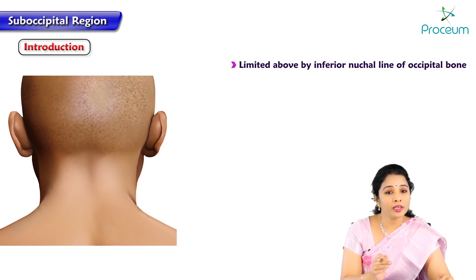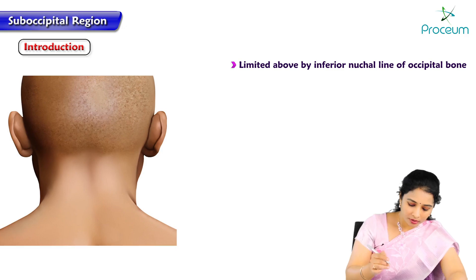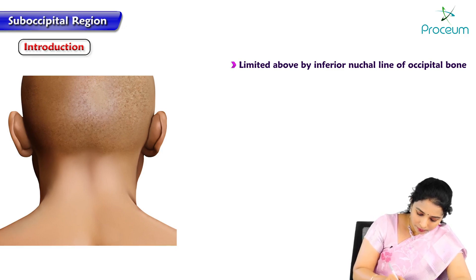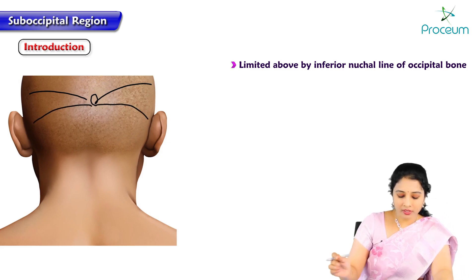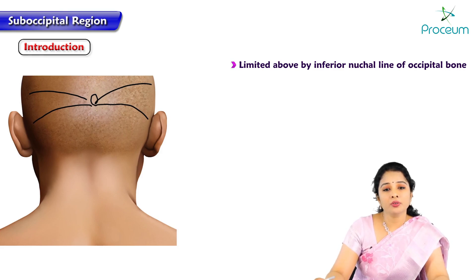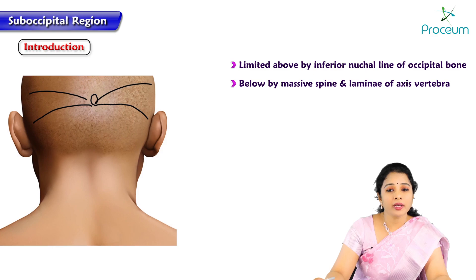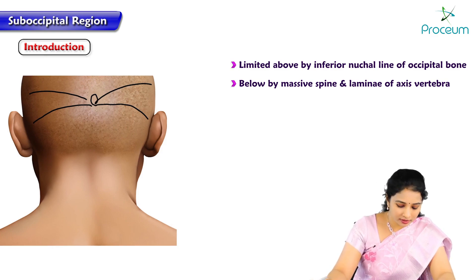The suboccipital region is limited above by the inferior nuchal line of the occipital bone. Here is the external occipital protuberance, superior nuchal lines on each side, and inferior nuchal lines. Above it is limited by the inferior nuchal lines and below by the massive spine of the lamina of the second cervical vertebra, that is the axis.